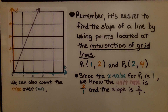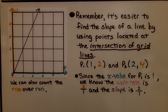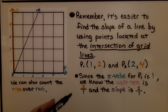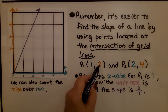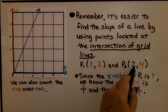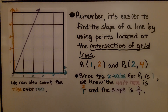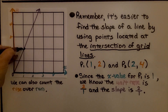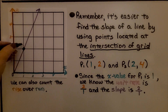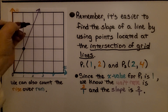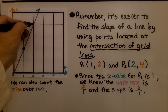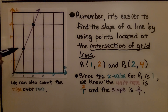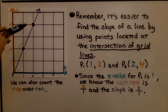It's easier to find the slope of a line by using points located at the intersection of grid lines. For point 1, we have x = 1 and y = 2. For point 2, we have x = 2 and y = 4. Plotting point 1 at (1, 2) is exactly where these grid lines are crossing — the horizontal one crossing the vertical one. At (2, 4), the vertical and horizontal lines also cross. It's easier to use points located at the intersection of grid lines to find the slope.